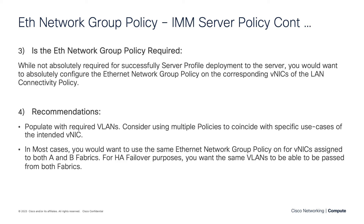You definitely want to configure this policy and populate it with the applicable VLANs. You could consider building multiple policies and treating them as VLAN groups to be subsequently attached to the different VNICs in your LAN connectivity policy. In most cases, to support high availability and failover, you're going to want the same VLANs being uplinked out of fabric A as well as fabric B, so in most situations you can use the exact same policy for both.